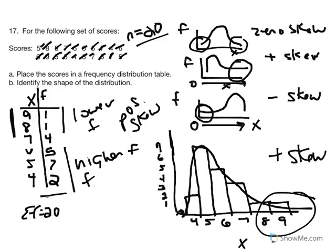Sketching the histogram is not required for this problem, but it's helpful to affirm our understanding of zero skew, positive skew, and negative skew. Looking at a frequency table, we should be able to assess the skew of a distribution — or if it's difficult, go ahead and construct the histogram or polygon to visually determine if the distribution is skewed and in which direction.